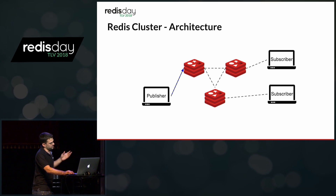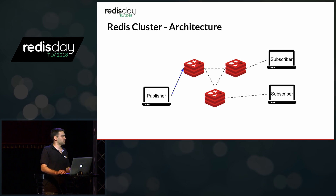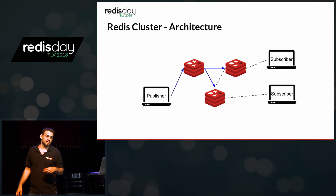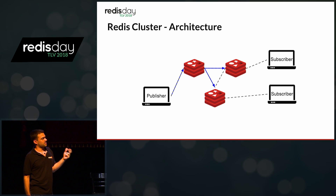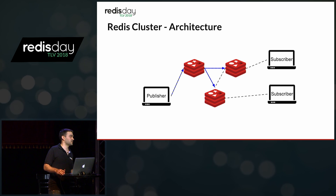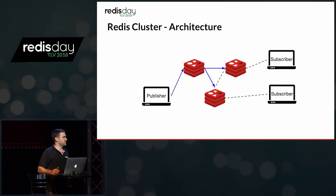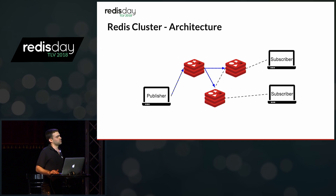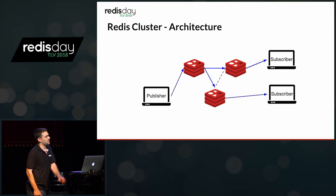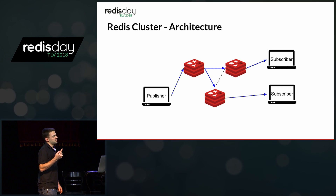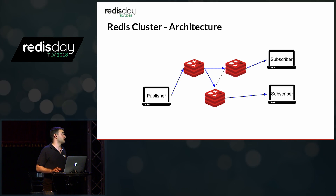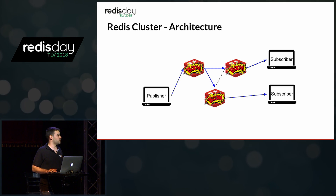The publisher sends a message to a specific node — in this case the top-left node — which in turn copies that message for every other node in the cluster. If you remember, in the single-node case Redis directly forwards the message to the subscriber. In the cluster case, it first transfers the message to all nodes in the cluster, which then forward it to the subscriber. So the same single message is now duplicated multiple times, creating much more load, and the cluster will blow up as well.